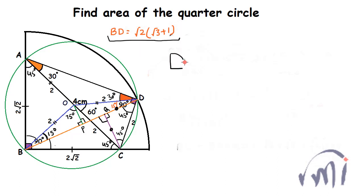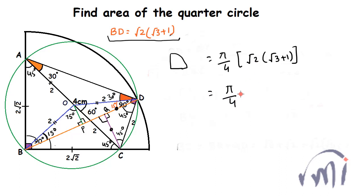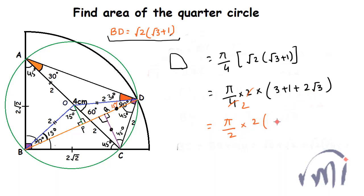The area of this big quarter circle equals (π/4) multiplied by the square of the radius. The radius is √2·(√3+1), so its square is 2·(√3+1)² = 2·(3 + 1 + 2√3) = 2·(4 + 2√3). Dividing by 4 gives (π/2)·(4 + 2√3), and taking 2 common inside gives π·(2 + √3). So the area of the quarter circle is (2 + √3)π square centimeters.